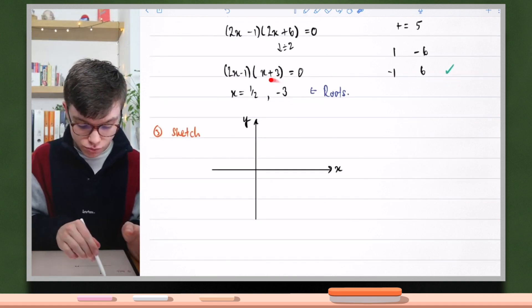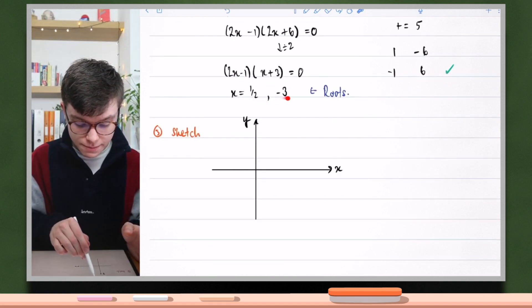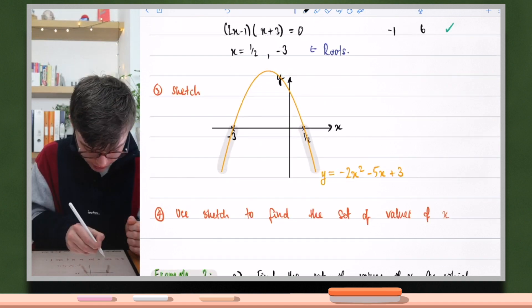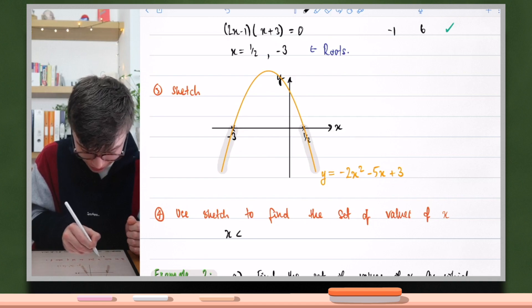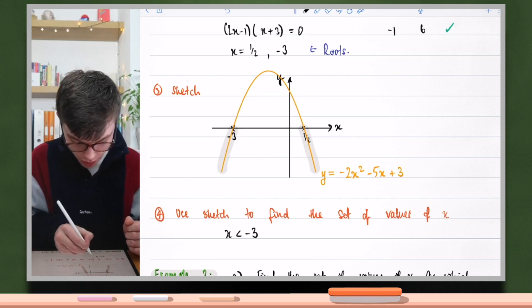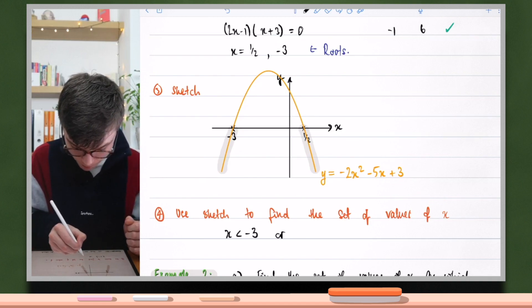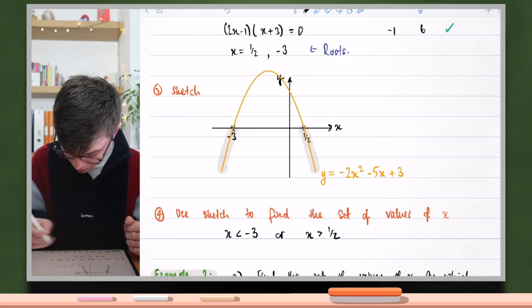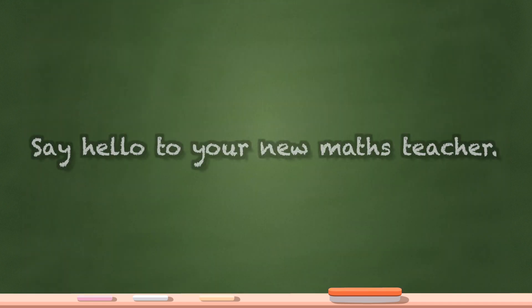And we can see the roots are a half and minus three. We're going to have x being less than minus three, or x being greater than a half.